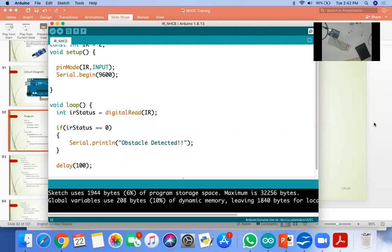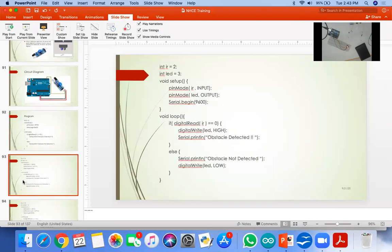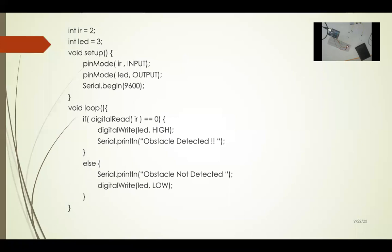Are you getting this point about the IR sensor? In the serial monitor: obstacle detected and obstacle not detected messages appear. You can also connect an LED — if obstacle detected, the LED glows; if not detected, it does not glow. Similarly, a buzzer can be connected: if obstacle is detected, the buzzer starts ringing; otherwise the buzzer stays off.